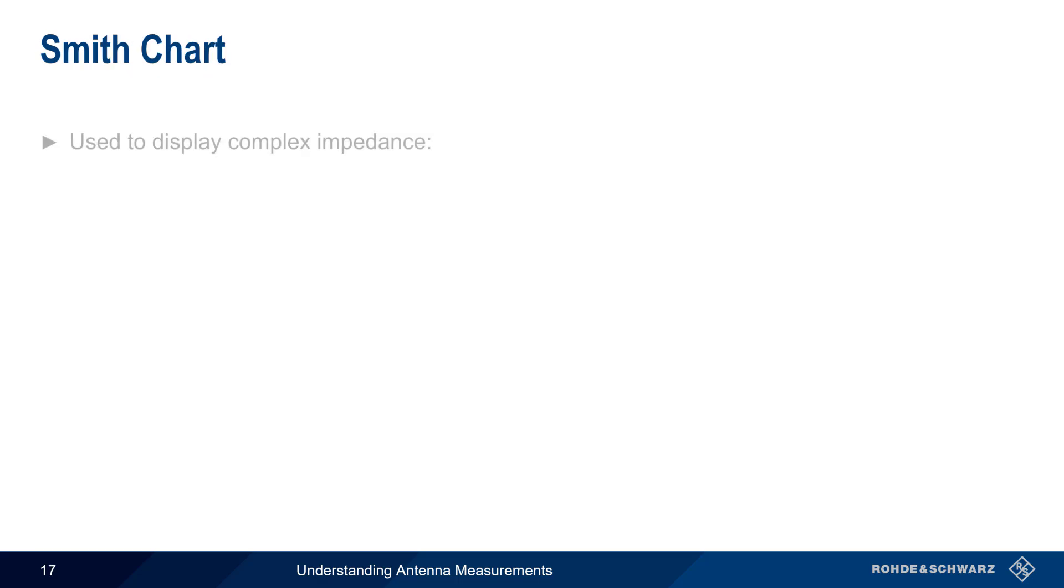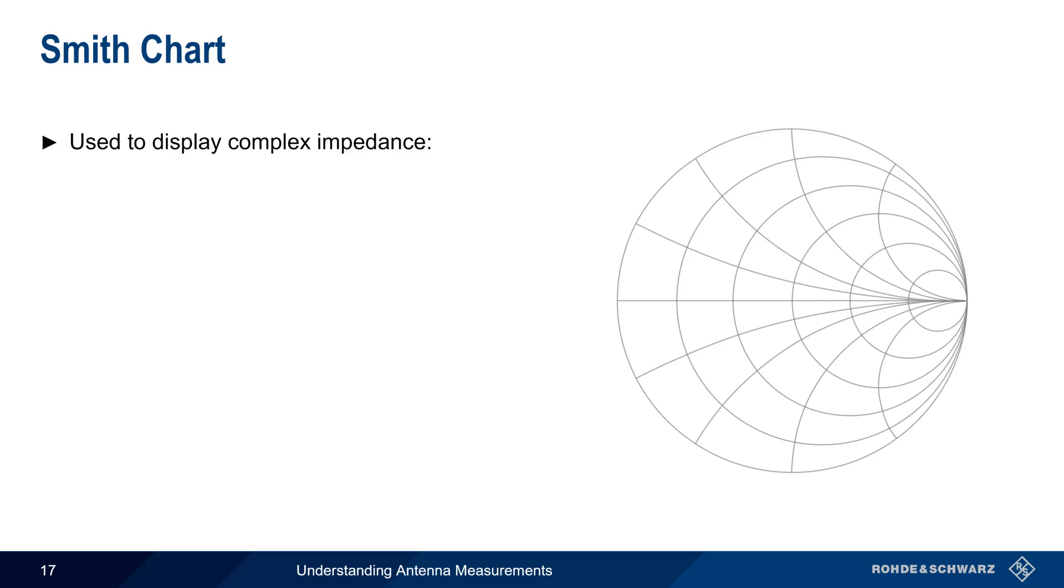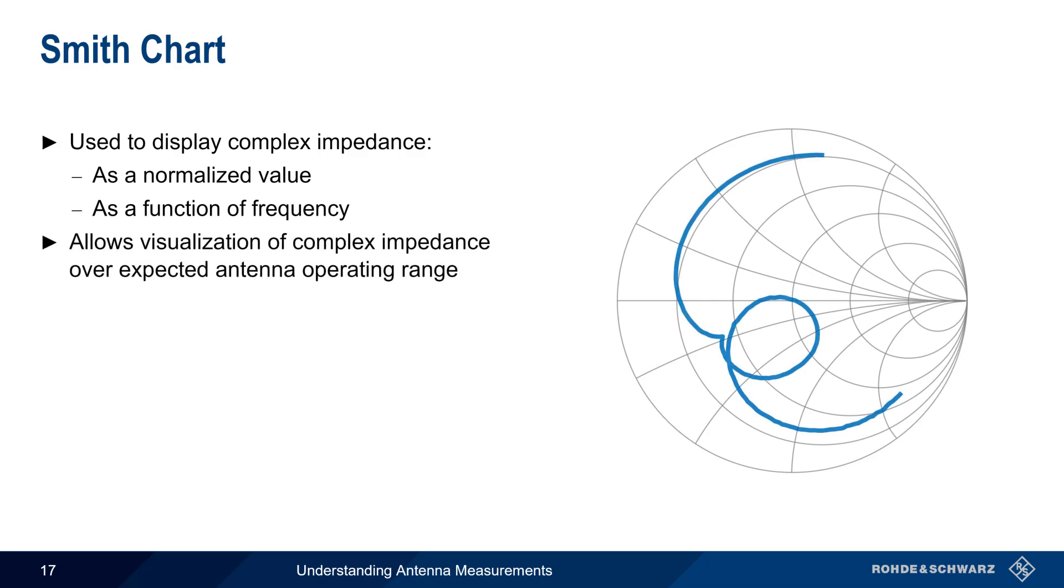On VNAs, complex impedance values are often displayed on a Smith chart. The Smith chart shows complex impedance as a normalized value and as a function of frequency. In the case of antenna testing, the Smith chart allows easy visualization of complex impedance over the measured frequency range, and markers can be used to read off the complex impedance at a given frequency.